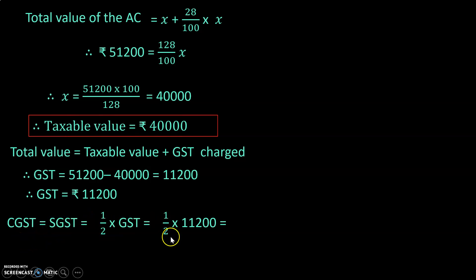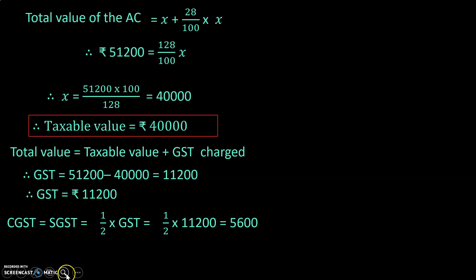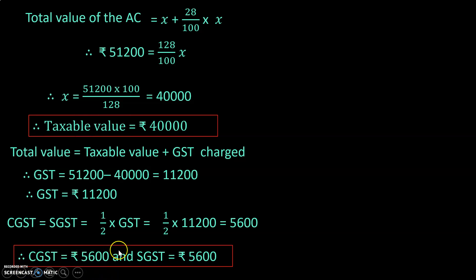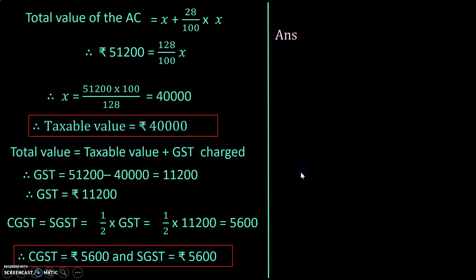CGST equals SGST equals half of GST, which equals half of ₹11,200, equal to ₹5,600. So CGST equals ₹5,600 and SGST equals ₹5,600. We have now found all the amounts that were asked.